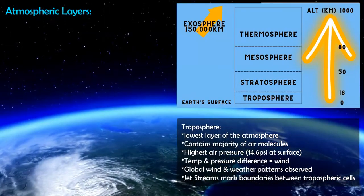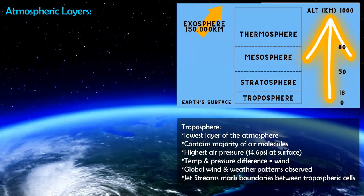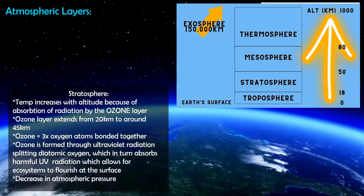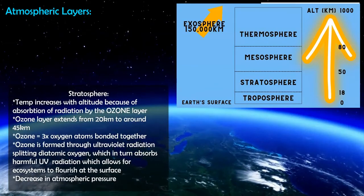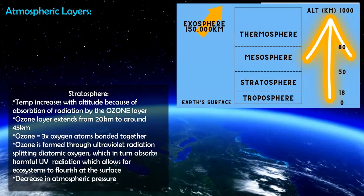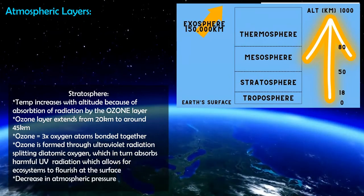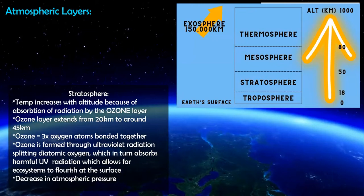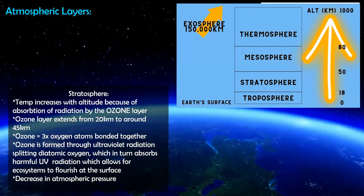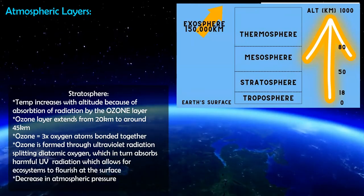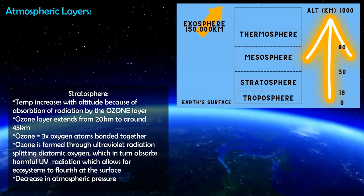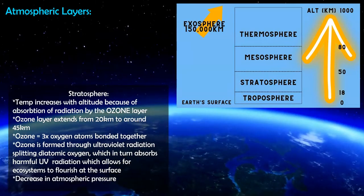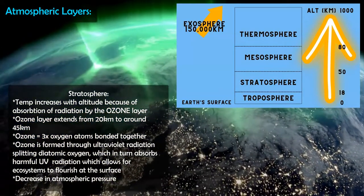The next layer is the stratosphere. This is important because it contains the ozone, which is O3 — three oxygen molecules bound together. Ozone absorbs incoming radiation, specifically ultraviolet radiation from the sun. It lets in UV-A, partially controls UV-B, and the more harmful UV-C is absorbed and reflected by the ozone layer.